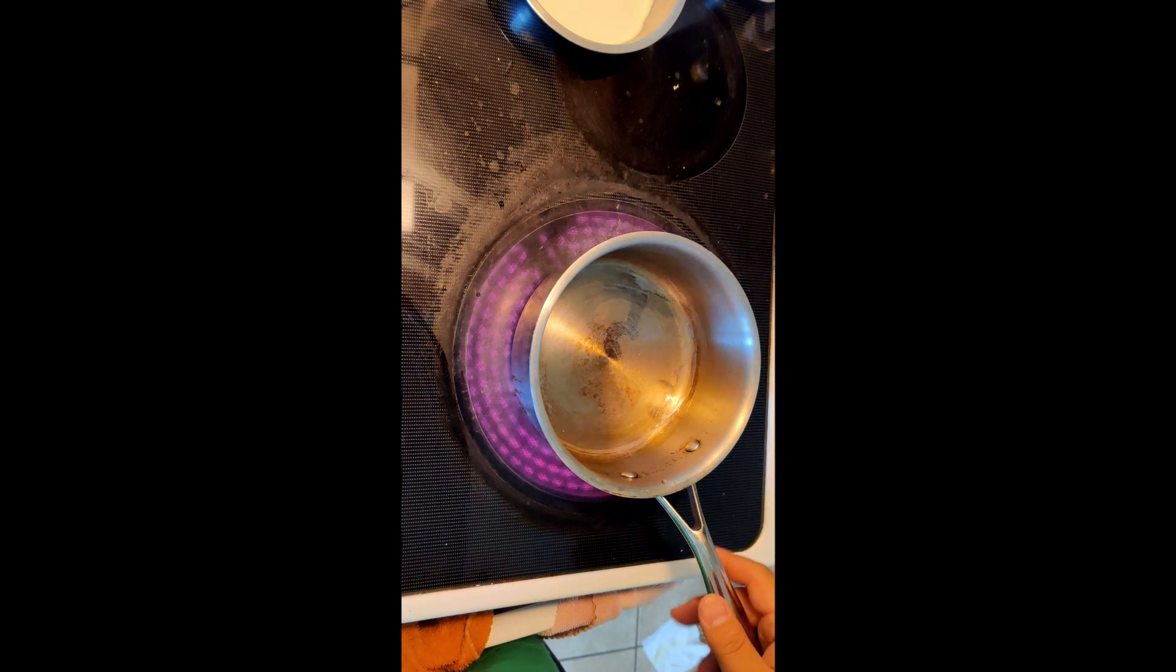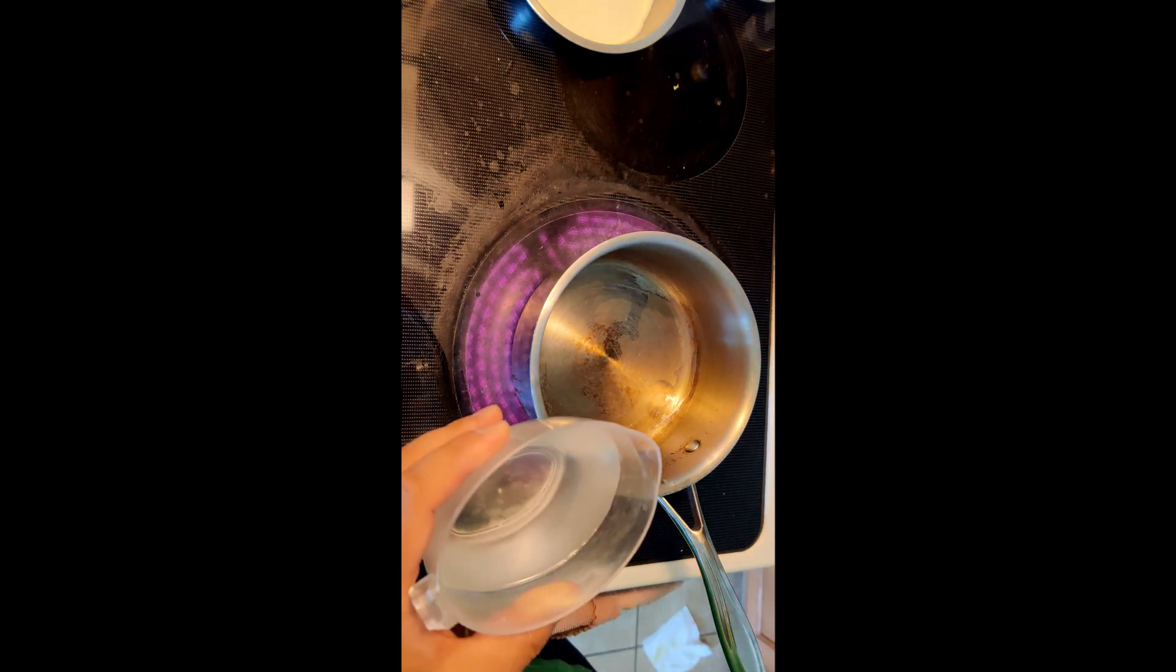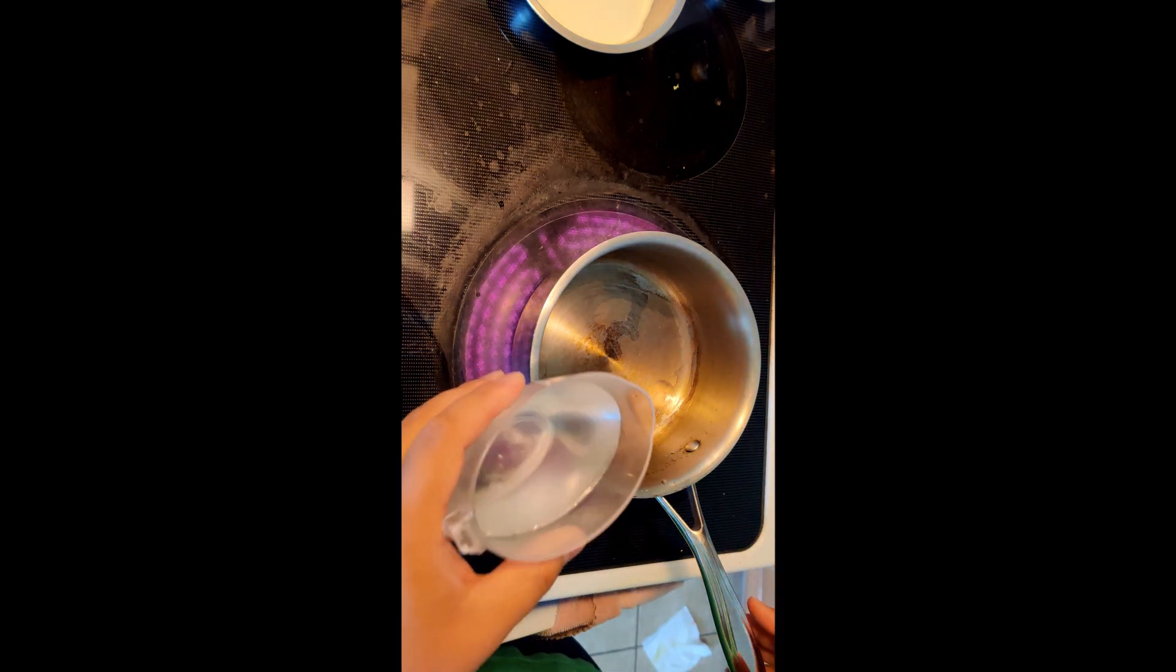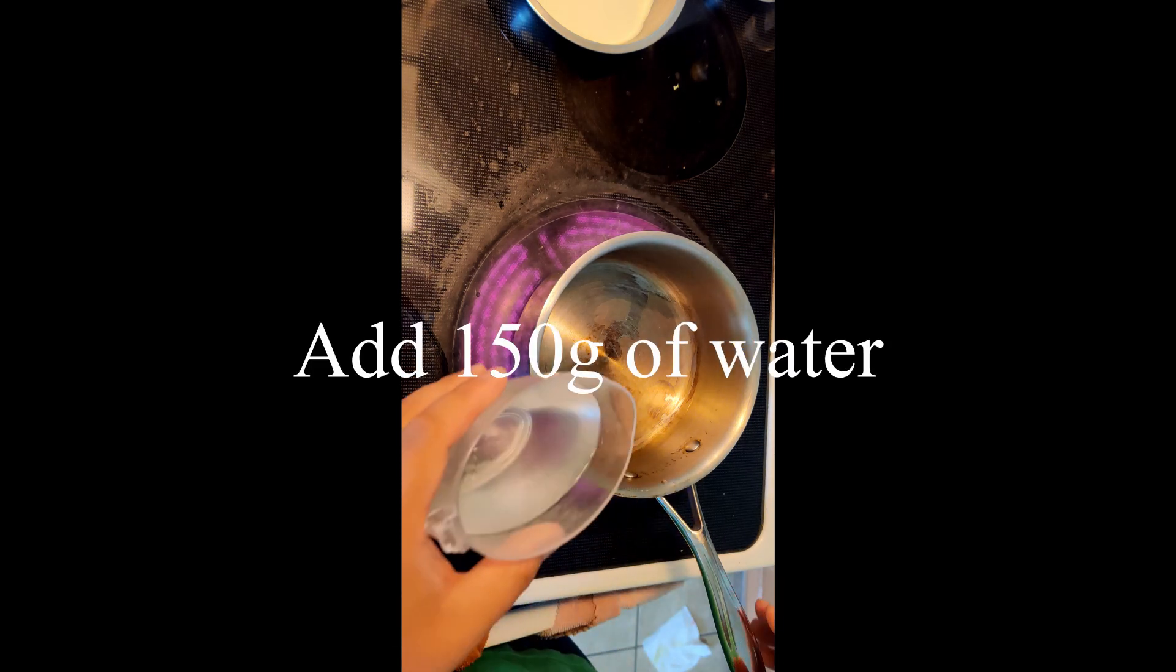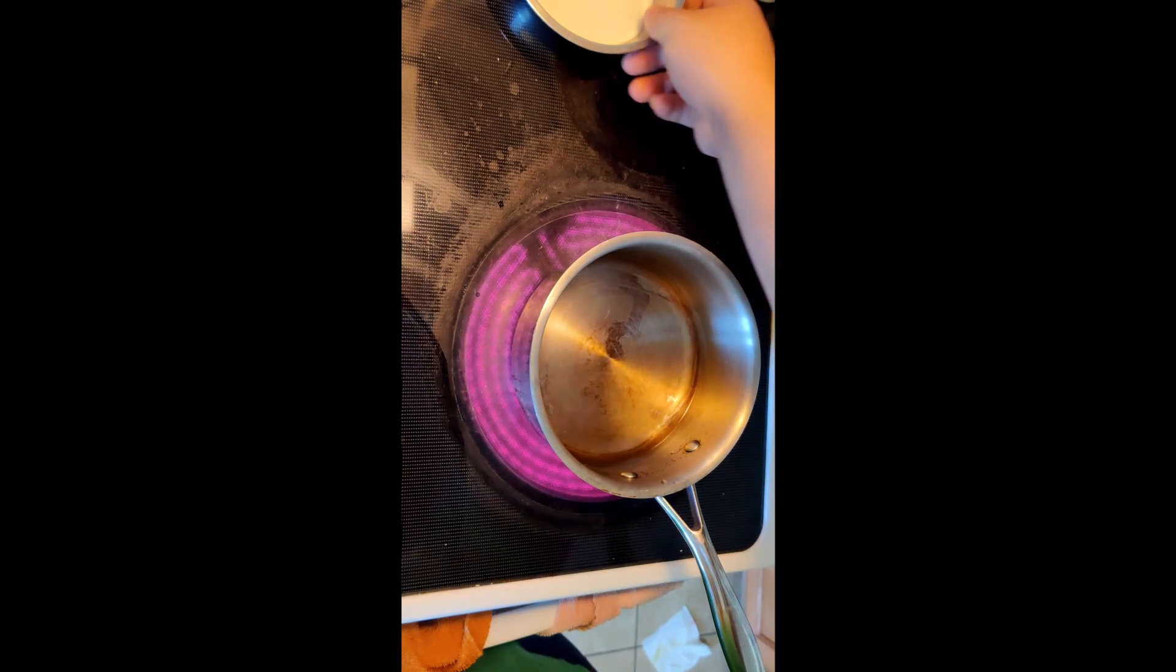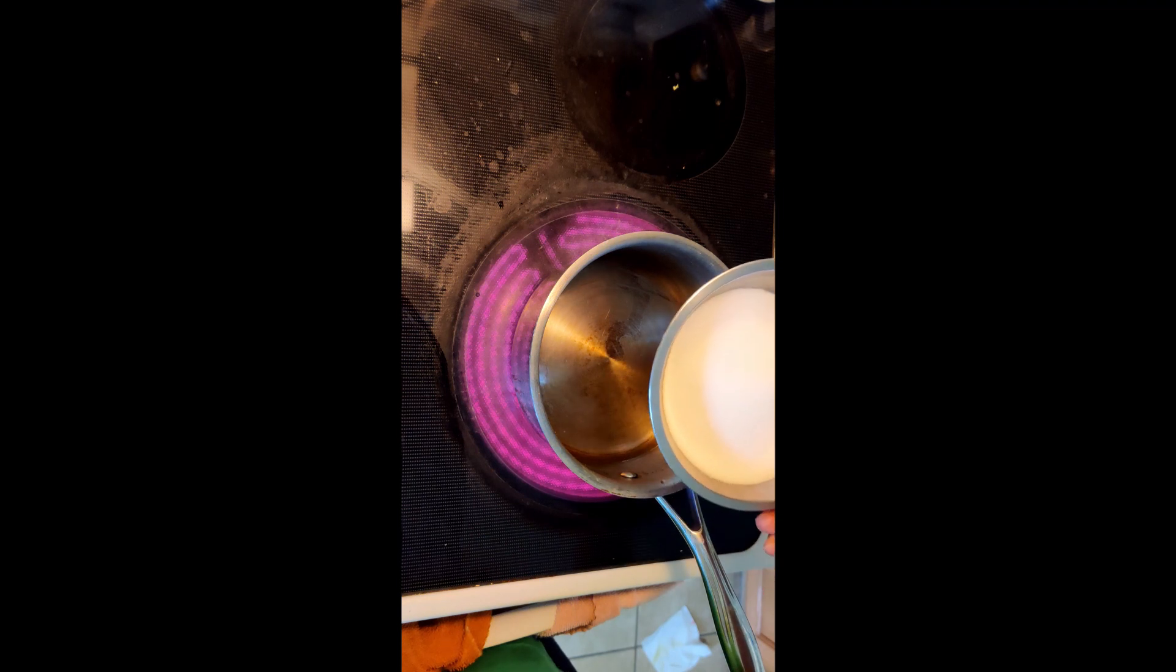Next step, we're going to turn the burner to high heat and then add 95 grams of white sugar.